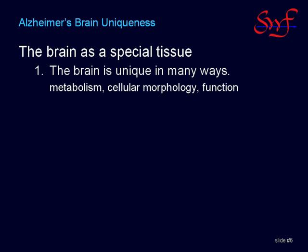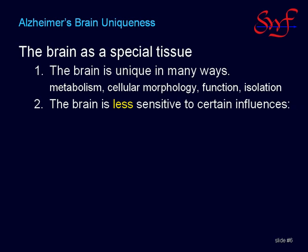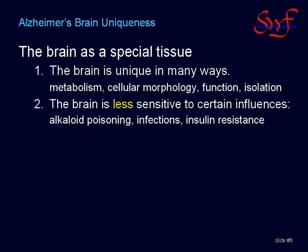The brain also has unique functions. Not only are the electrical signals of sensory systems and motor control systems processed by the brain, but many of the hormones of the body are sensed by the hypothalamus and regulated by the pituitary glands in the brain. These are intimately involved in health, aging, and lifespan. The brain is also isolated behind the blood-brain barrier, which selectively passes and rejects certain chemicals. This can make the brain less sensitive to alkaloid poisoning, immune-system-fought infections, or insulin resistance, which affects the GLUT4 glucose transporters of the body and not the GLUT1 transporters favored by the brain.